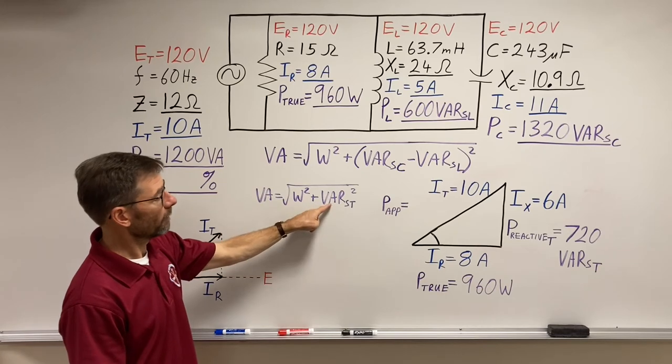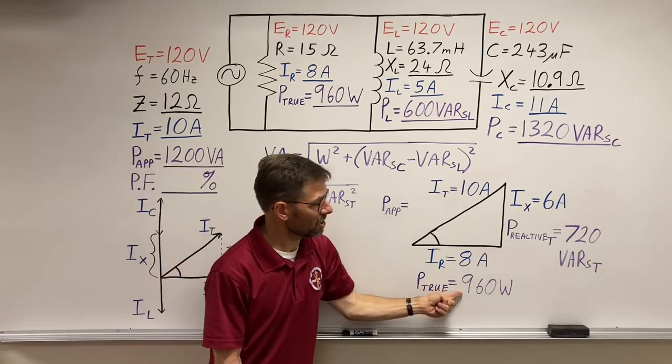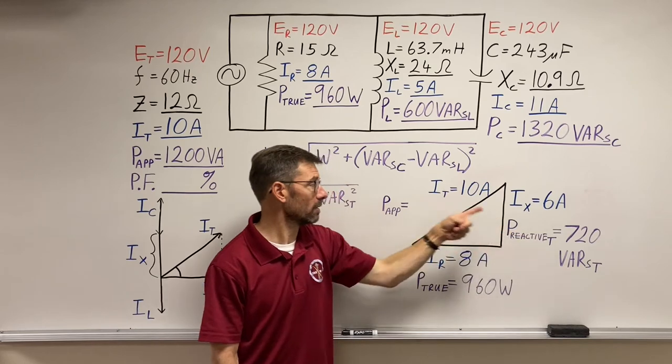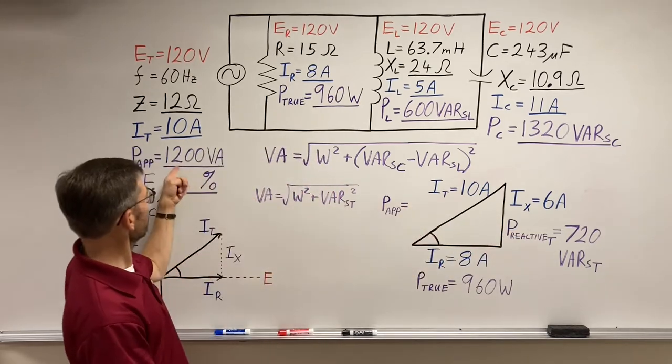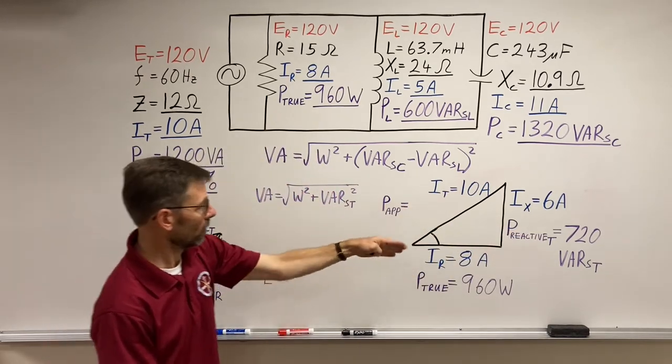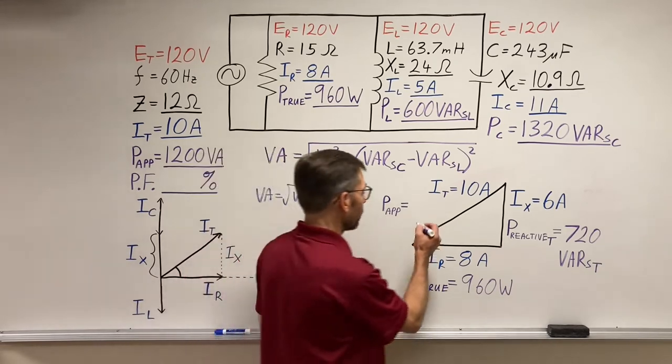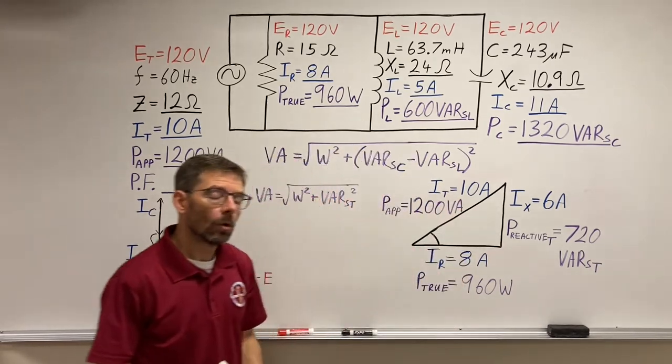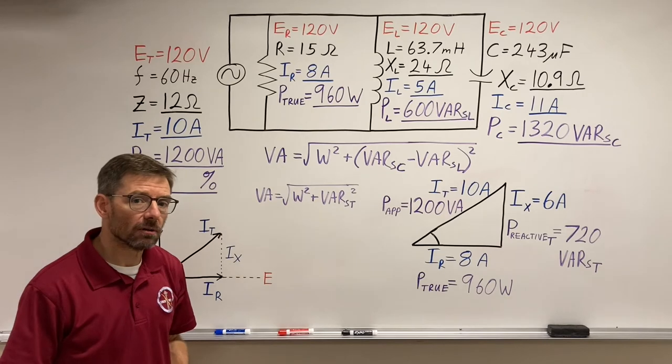Here, if I've already done that math, 960 squared, 720 squared equals power squared, 1200. And if you do that math, either of these formulas come up with 1200 volt amps.